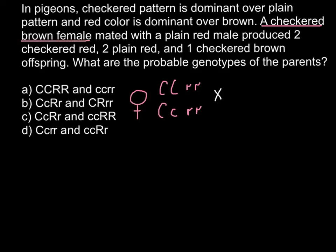Now we cross with a male who is plain red. Plain pattern is recessive, so both alleles have to be recessive. That means we have only one variant: small c small c. And for red color...